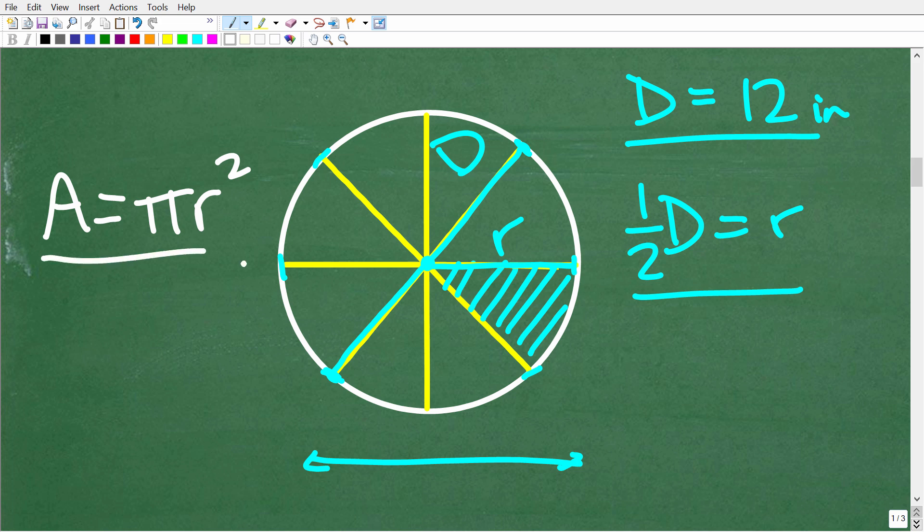This is the only formula that you need for this problem. Remember we're trying to calculate the area of one of these slices but this formula here will give us the area for the entire circle.